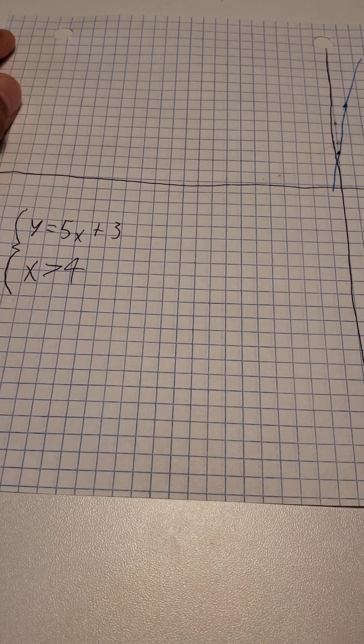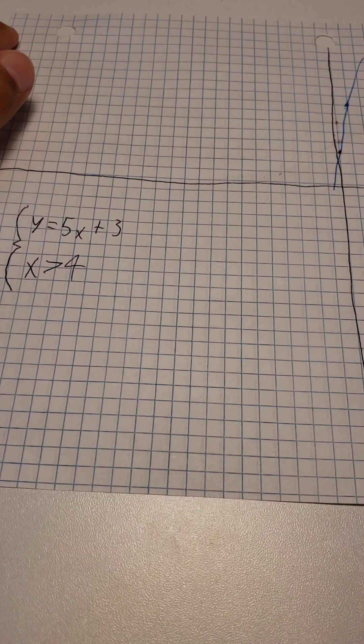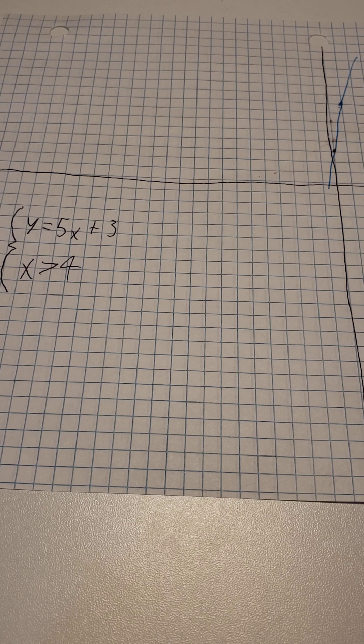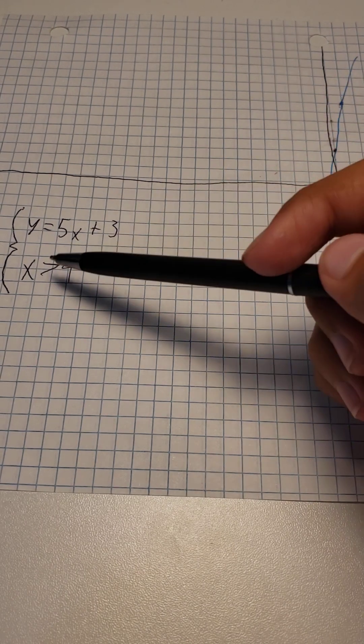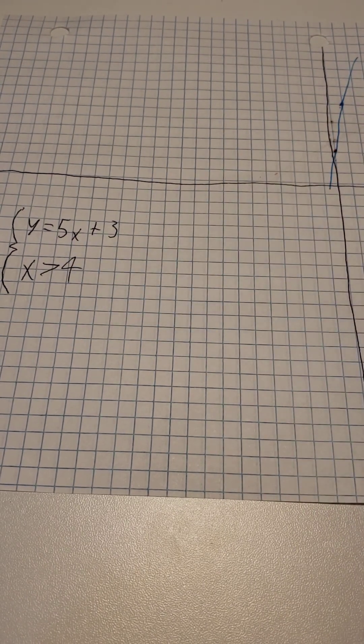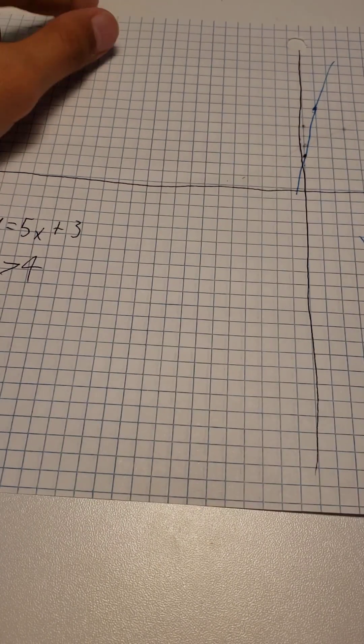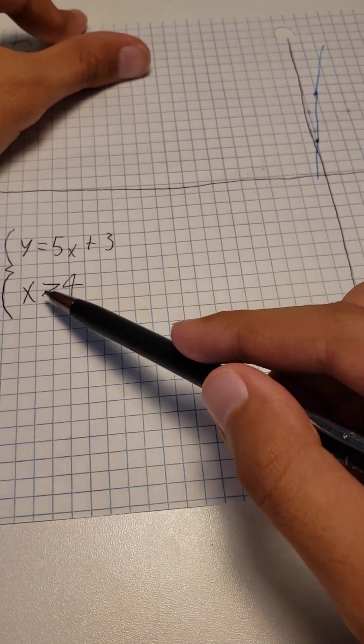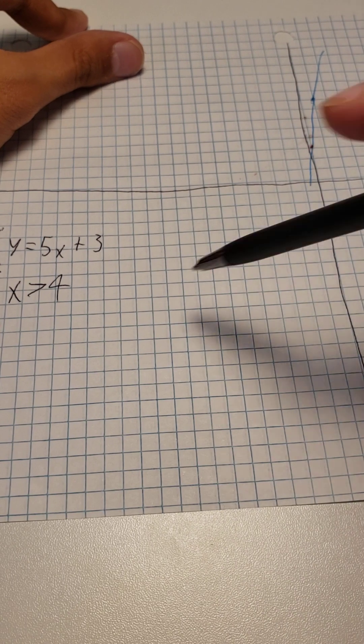it is understood that x must always be greater than 4, but the y variable, since we don't know it, could be constantly changing.